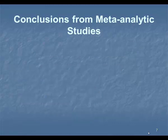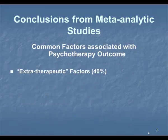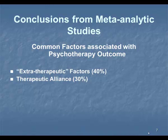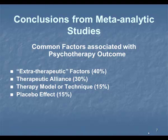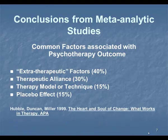In another study, the extra therapeutic factors counted for 40%. The therapeutic alliance counted for 30%. The therapy model or technique only counted 15%. The placebo effect was 15%. Do you all know what the placebo effect is?